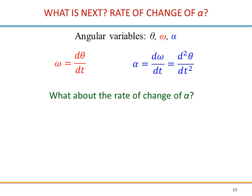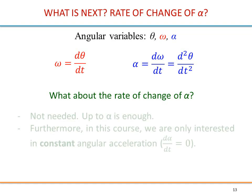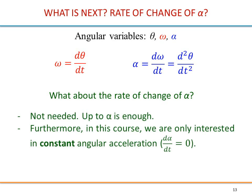So now we have theta, omega the speed, and alpha the acceleration. Omega is the derivative of theta, and alpha is the derivative of omega — therefore the second derivative of theta. We have the right to ask what about the rate of change of alpha? Because if alpha changes it may be interesting to know. But we realize there may be no end to this process. In this course we are only interested in constant angular acceleration, which means alpha is a constant — it does not change with time — therefore its derivative is zero, and we do not need to go further.